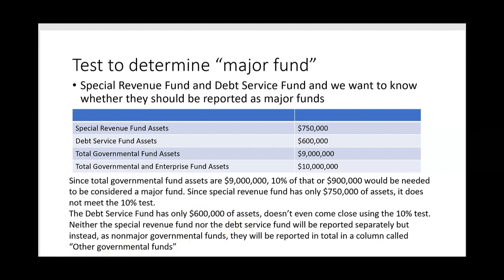On the exam, they'll give you something like this and ask which funds are major. The answer here: neither the special revenue fund nor the debt service fund will be reported separately. Instead, they'll be reported as non-major governmental funds in total in a single column called 'other governmental funds.' Because they don't pass the 10% test, we don't even have to worry about the 5% test or the $10 million total governmental and enterprise fund assets figure.